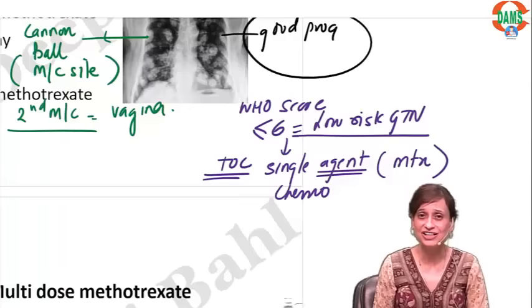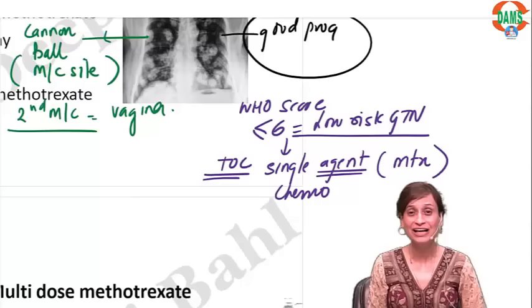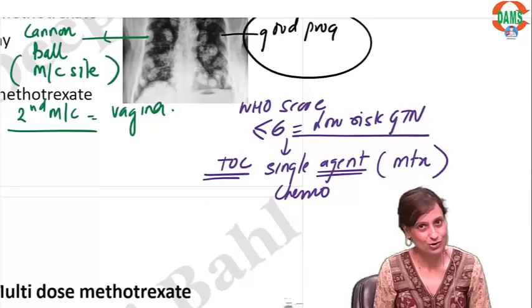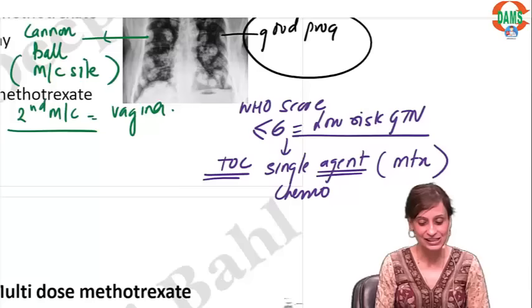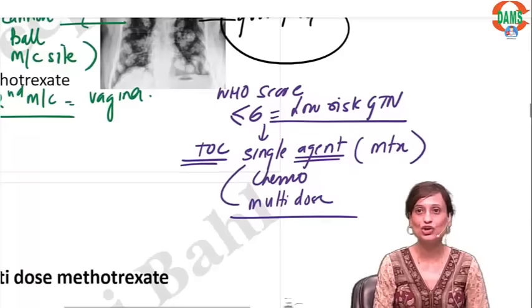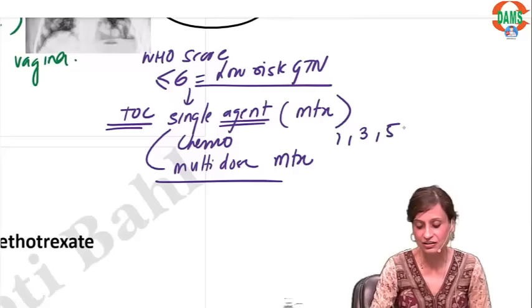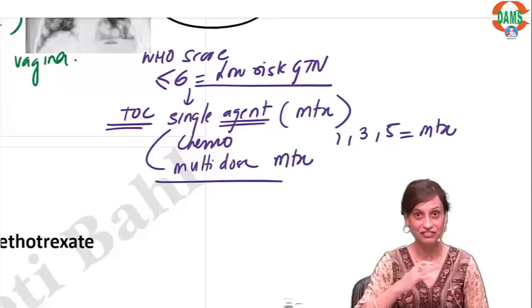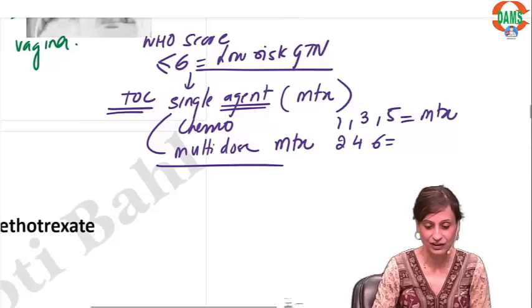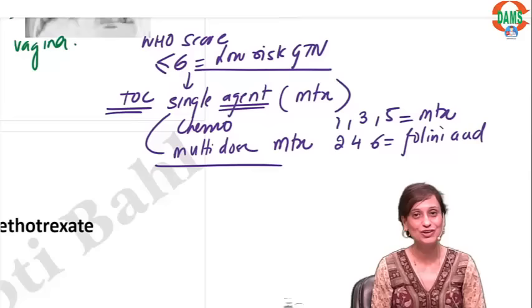Single-dose methotrexate is given for ectopic pregnancy. Here it is single agent but must be multi-dose. In multi-dose methotrexate, on days 1, 3, and 5 we give methotrexate; on days 2, 4, and 6 we give folinic acid. Folinic acid is given to prevent side effects — it is not a chemotherapeutic agent. So: single agent, multi-dose.